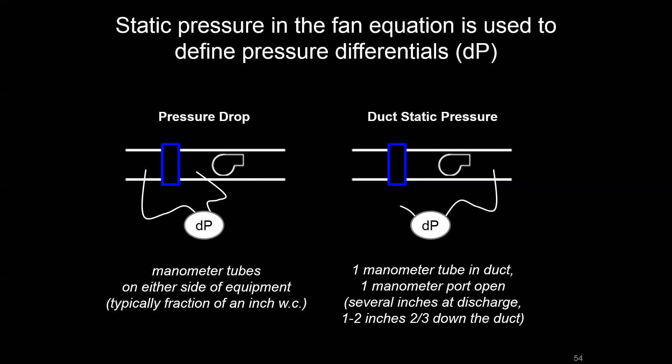Then we can look at things like duct static pressure. At the discharge of the fan, or somewhere fairly down—the industry standard is two-thirds down the duct—a lot of times there's a static pressure sensor that the fan will automatically control to, typically somewhere around an inch and a half of duct static. That's going to be accomplished by taking that manometer pickup, taking the static pressure of that duct and then having one manometer tube open to atmosphere.